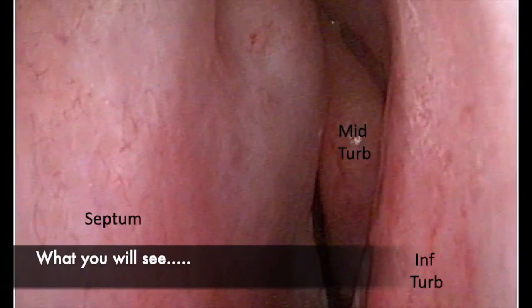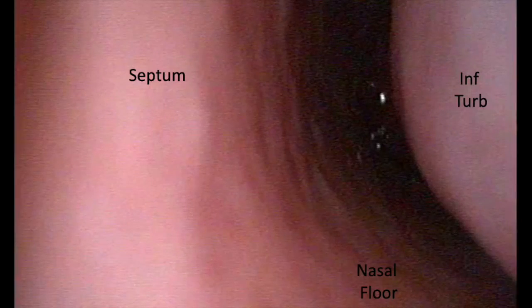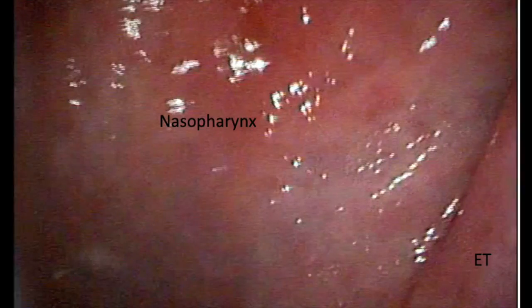Here is a video of what you will see. First you see the inferior turbinate, middle turbinate, and septum. Aim towards the floor of the nose and advance forward. You will look to see the septum medially and the turbinate laterally.